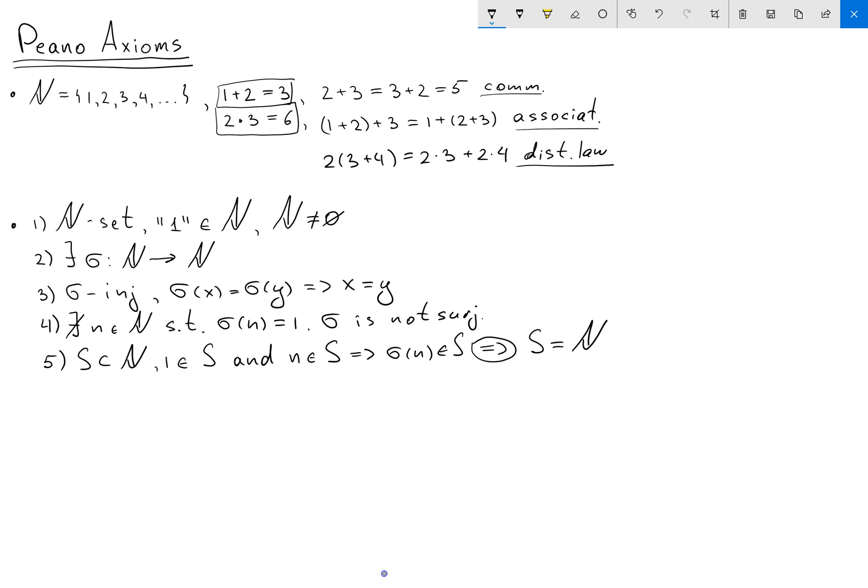Okay and you can see you have five laws and from these five laws we can construct natural numbers N which is like one, two, three, and etc. with all properties. And this is the beauty of Peano axioms. Thank you for watching.